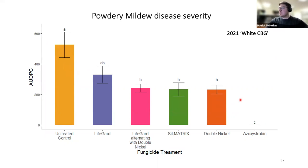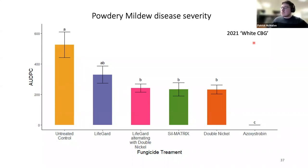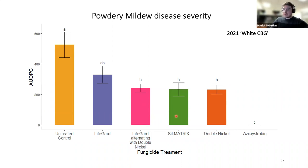This was repeated in 2021 using a different cultivar, White CBG, which had been observed to be more susceptible to powdery mildew. Again, the untreated control had the highest level of powdery mildew infection. All fungicide treatments seemed pretty effective. Lifeguard alone was not statistically significantly different from the untreated control; however, alternating Lifeguard and Double Nickel, or using Double Nickel or Cell Matrix alone, showed good disease control, suggesting Double Nickel is a particularly effective biofungicide.